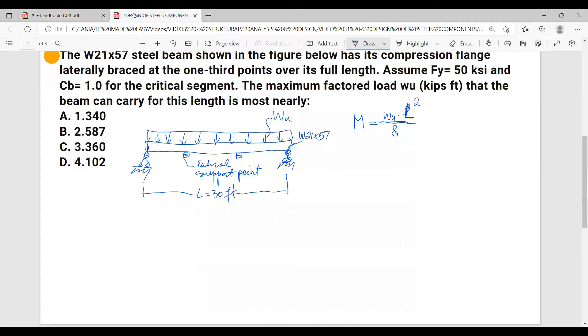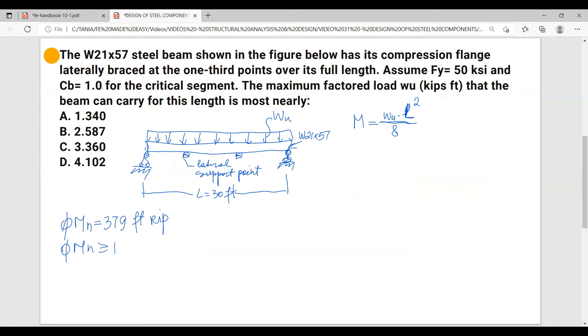So available moment phi mn is 379 foot-kips. We also know that phi mn must be greater than or equal to mu. This is mu. So from here, now going back to this equation, I will calculate what the problem is asking us, the maximum factored load, and it's going to be 8 mu over L squared.